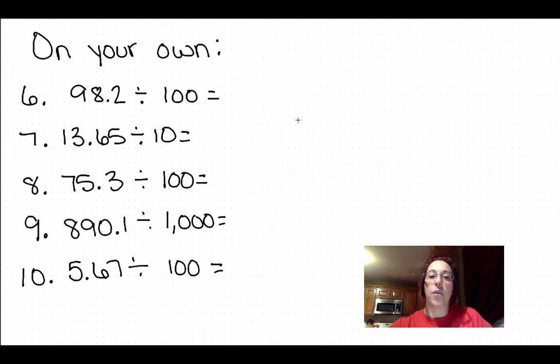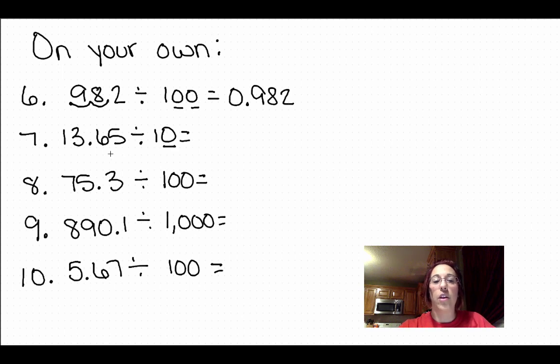Welcome back. Let's go ahead and double check your work. Number six, we have one, two zeros. That means our decimal goes one, two spaces. 0.982. Number seven, we have one zero. Our decimal goes one place. 1.365.